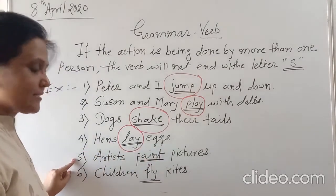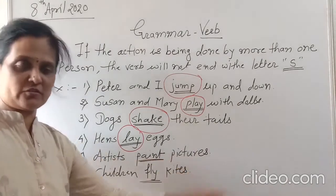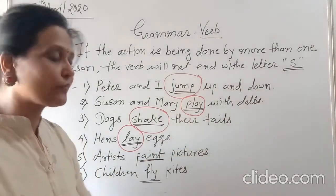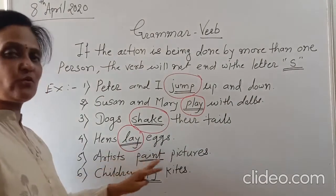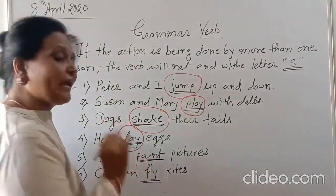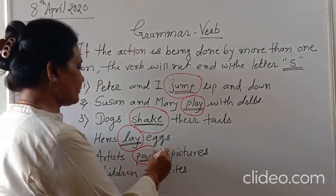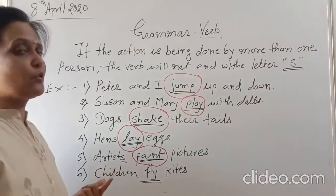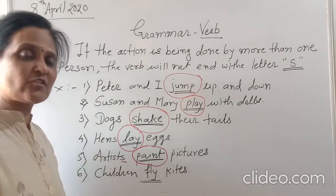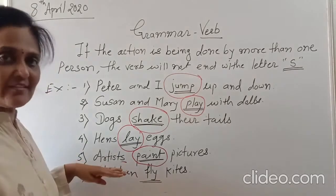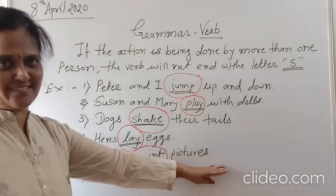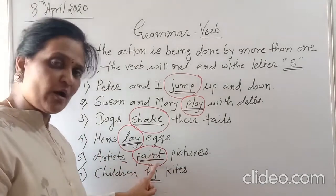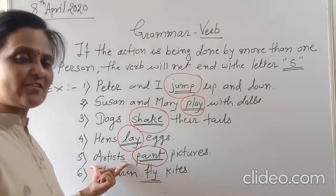The fifth example is: Artists paint pictures. What are the artists doing? They paint pictures. So which is the action word in this sentence? Paint. They are painting their pictures. I circle the action word — paint. Here are more than one artist. There is an 's' — artists — more than one artist, a plural noun. Artists paint pictures. Paint is the action word. We cannot use 's' with this verb because here there are many artists in this sentence.